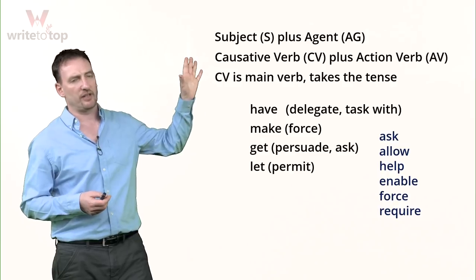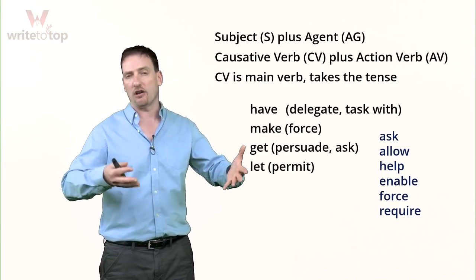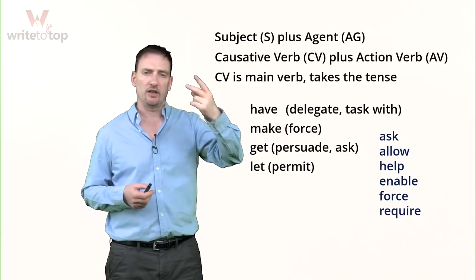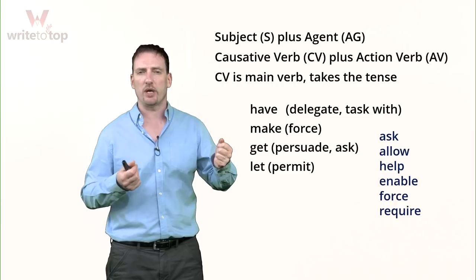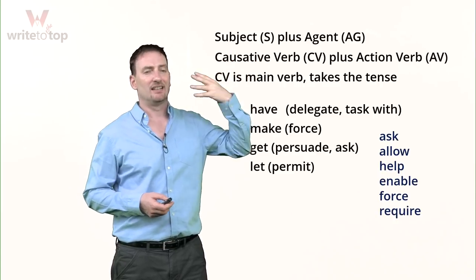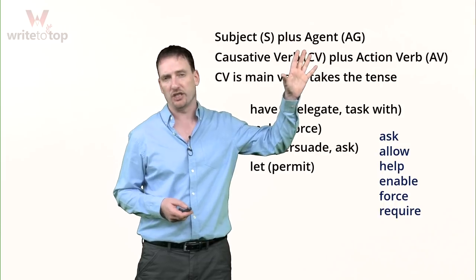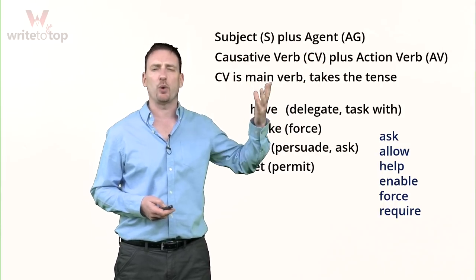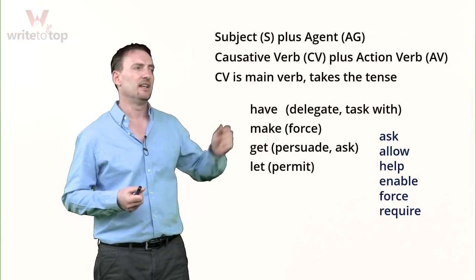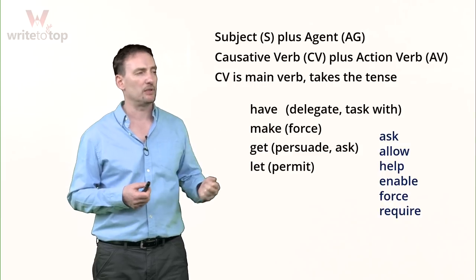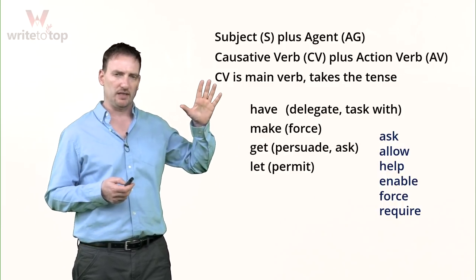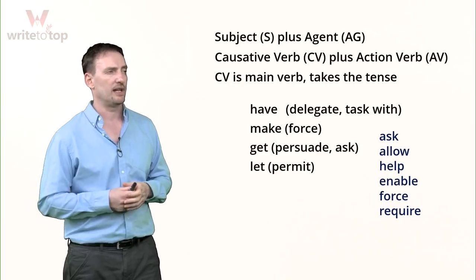A few things to keep in mind. In a causative structure, in the clause or the sentence, depending how you're using it, you're going to have a subject and you're going to have an agent — two people or things, each with its own verb. The subject doesn't do the action of the sentence; the agent does. The subject is almost always going to be human because the subject causes the agent to act.